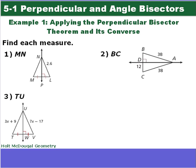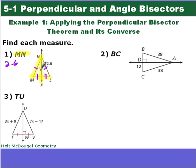We're going to look at a few examples using those two theorems. For number one, find each measure — MN. We know that line NP is perpendicular to ML and these two pieces are congruent, so NP is a perpendicular bisector to ML, meaning every point is equidistant from M as it is to L. So MN has to equal 2.6 — the same length as NL.